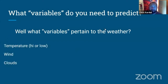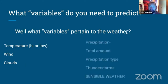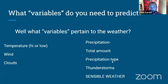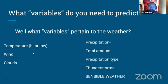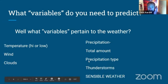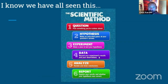Variables that pertain to weather include temperature highs and lows, wind, clouds, and precipitation — including total amount, precipitation type, and timing. If you live in Vermont this time of year, you never know what type of precipitation it's going to be. Overall, what we care about most when forecasting for the general public is sensible weather.